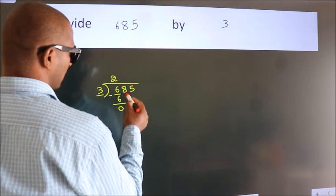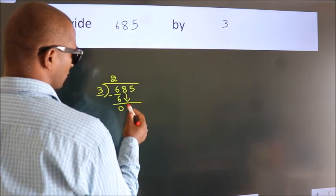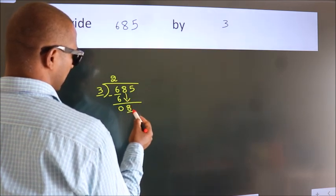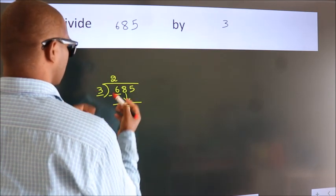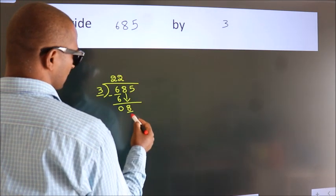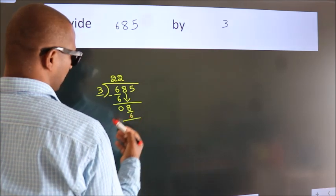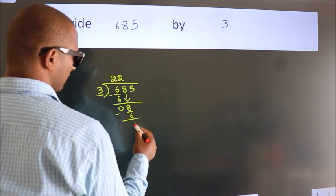After this, bring down the beside number. So, 8 down. A number close to 8 in the 3 table is 3 twos, 6. Now, we subtract. We get 2.